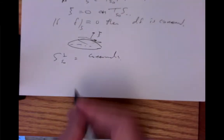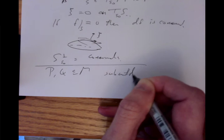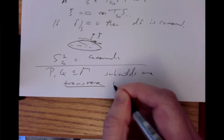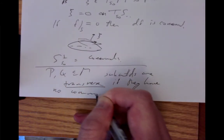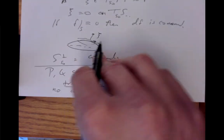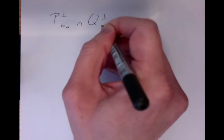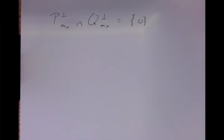Two submanifolds are called transverse if they have no nonzero conormals in common. So P and Q, submanifolds in M, are transverse to one another if the conormals at each intersection point intersect only at the zero vector. The zero covector is of course conormal to everything, but not in an interesting way.